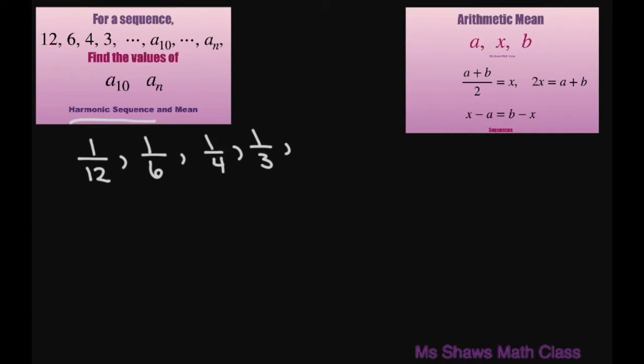1 divided by a sub 10, and 1 divided by a sub n. So now we have an arithmetic sequence where our first term is 1 divided by 12 and our common difference is also 1 divided by 12.